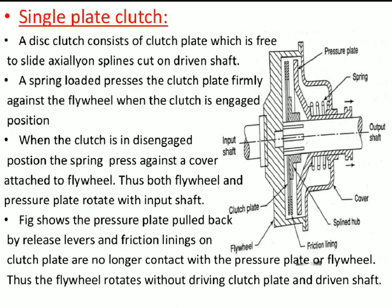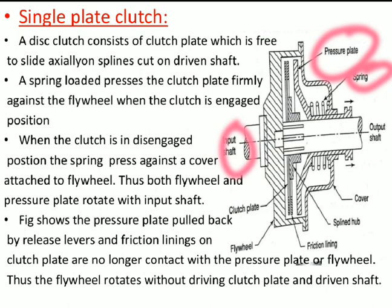Let's start with the single plate clutch. This is the general overview of a single plate clutch. You can see there is a spring used for the clutch to come in contact with the flywheel and return to its initial position. There is a pressure plate, which is the initial plate of the clutch. There is an input shaft where power is given, and an output shaft from where power is transmitted to the gearbox. There is also cover, splined friction lining, and the flywheel. The springs and pressure plate normally come in contact with the flywheel to absorb and transmit power to the output shaft.